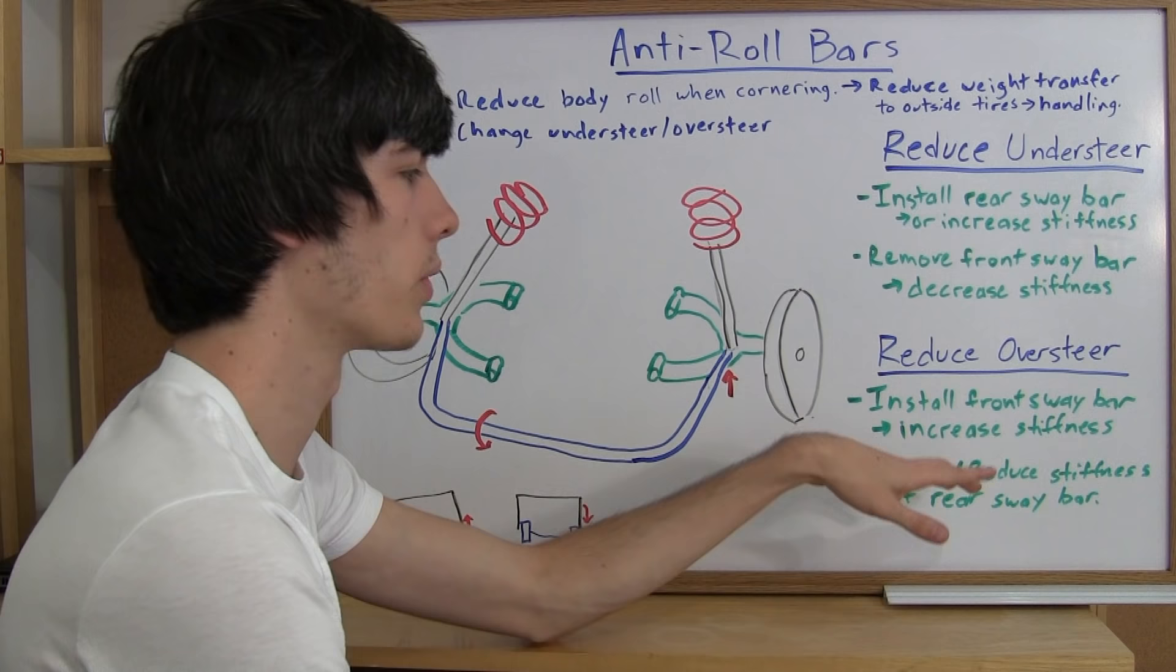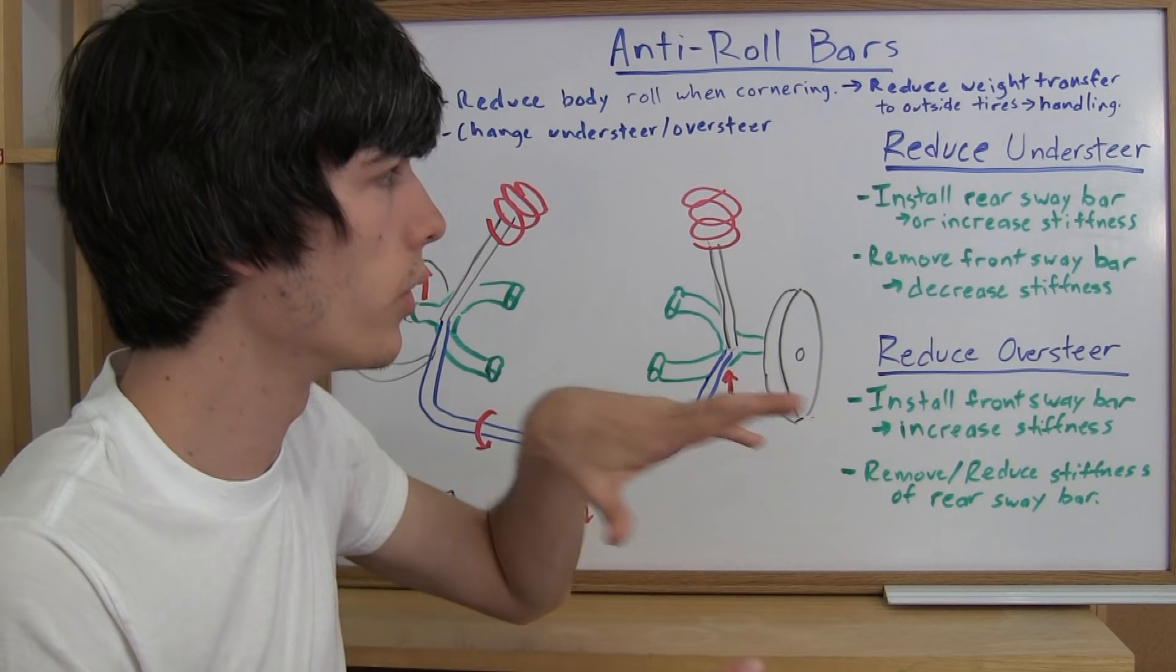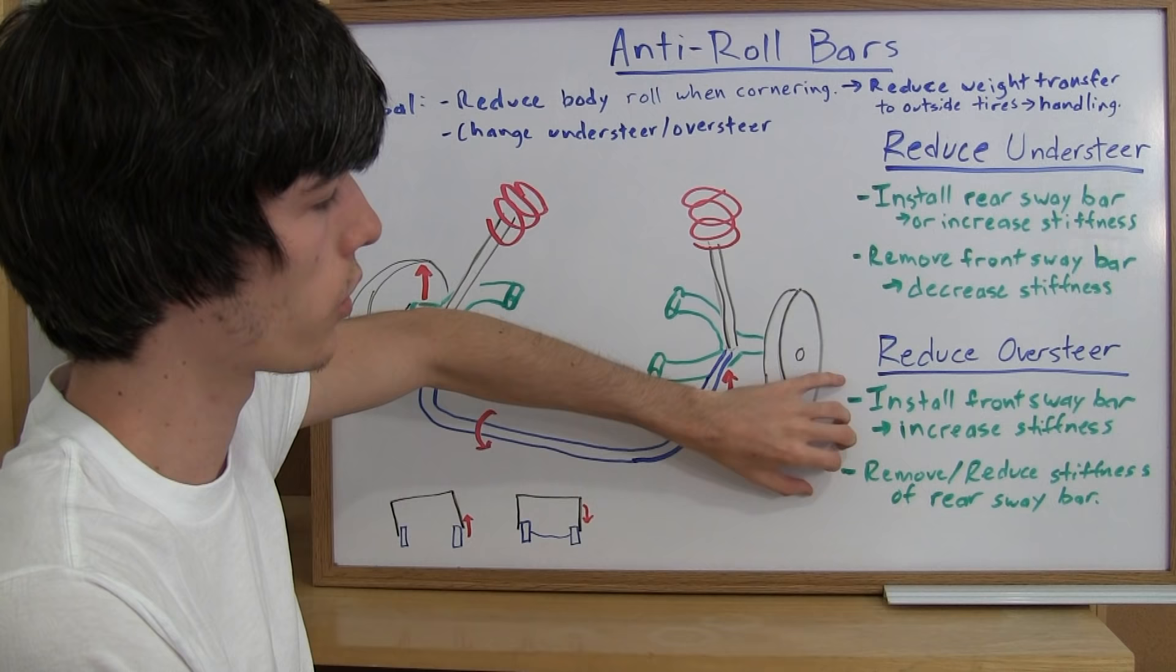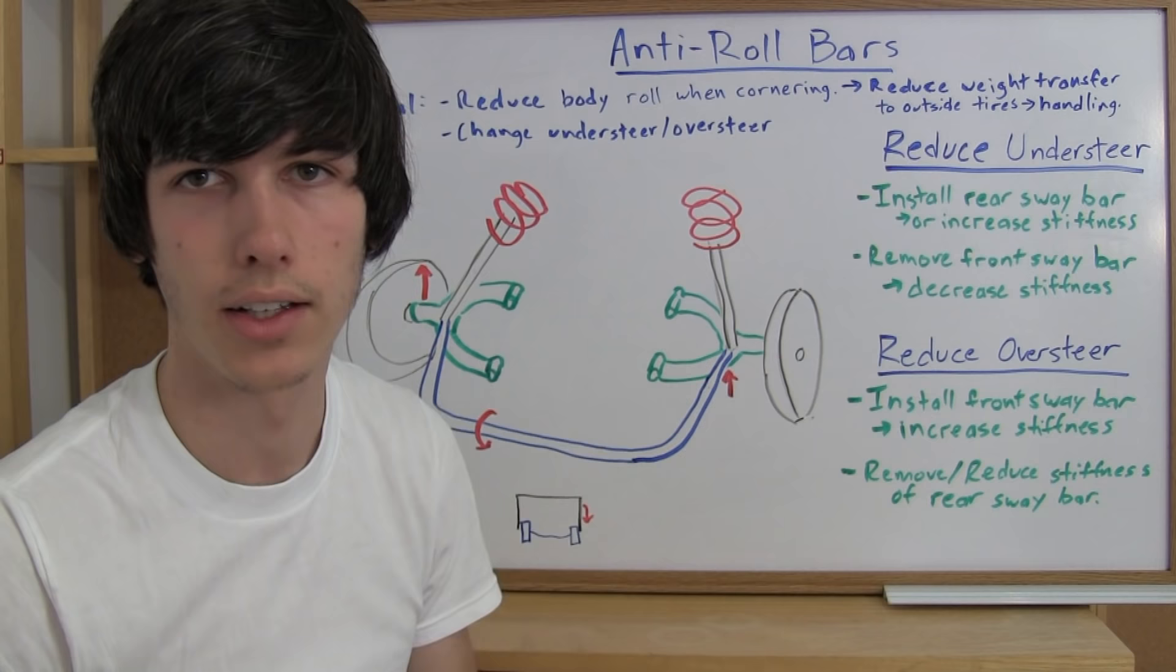Now removing it probably isn't the best option. You probably want to reduce the stiffness or increase the stiffness first rather than just take something out and see how that affects the handling. But this is the methodology you should use when you're trying to reduce understeer or reduce oversteer and increase the handling of your vehicle.